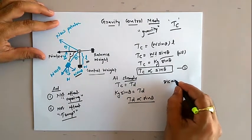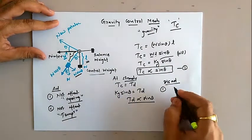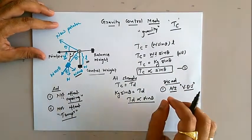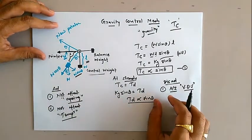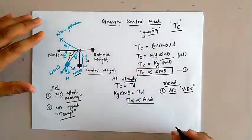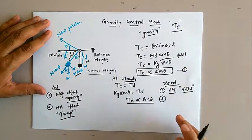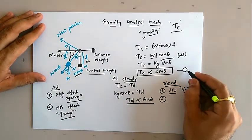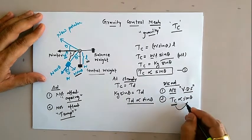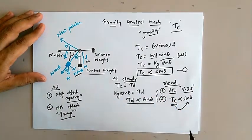Now the disadvantages of gravity control mechanism. The first disadvantage is that this type of control mechanism can only be implemented in analog instruments designed for vertical dial setting. This mechanism must be used in instruments placed vertically, not horizontally, because it works on the principle of gravity which is clearly effective in the vertical case. The second disadvantage is that from equation 1, the magnitude of controlling torque is proportional to sin theta, meaning the controlling torque follows a non-linear relationship with respect to the final deflection angle theta, which is undesirable.